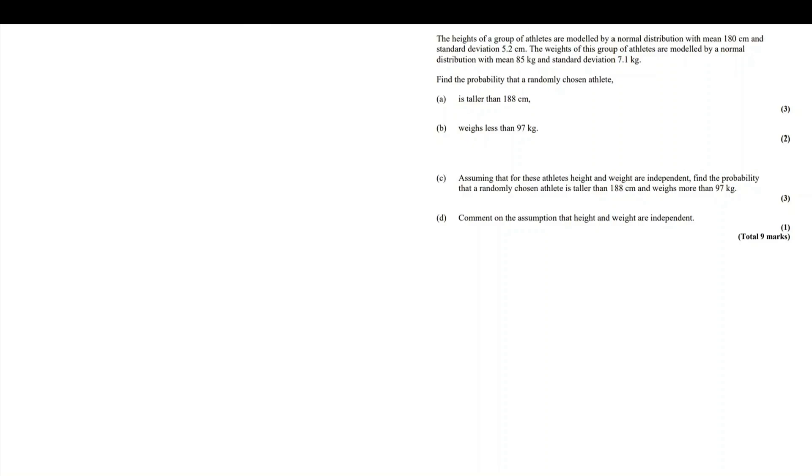In this question, we're told that the heights of a group of athletes are modeled by a normal distribution with mean 180 centimeters and standard deviation 5.2. The weights of this same group of athletes are modeled by a normal distribution where the mean is 85 and the standard deviation is 7.1.